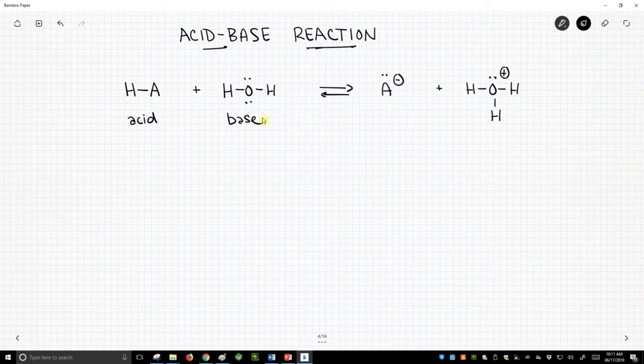When this acid-base reaction occurs, the base picks up a proton, picks up an H from our acid. That gives us an A-. If HA loses H+, it must have a negative charge, and so it will be A-.